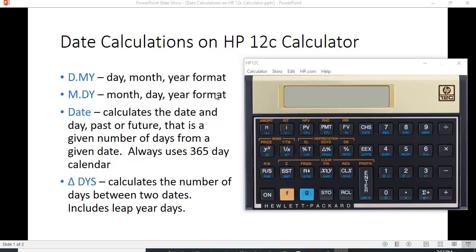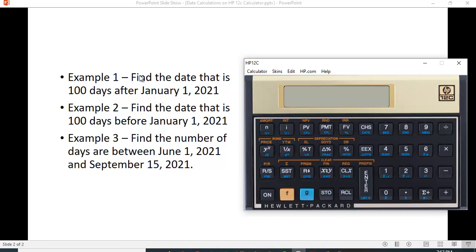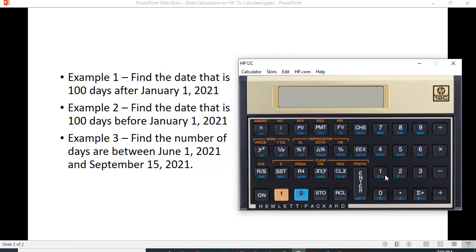So let's take a look here. Let me bring my calculator back. Let's find the date that is 100 days after January 1, 2021. So I'm using the month, day, year format, so I type in... I've got to turn on my calculator. Let me clear it. So you put in 1.01, 2021, and you hit enter, and then you type in 100.